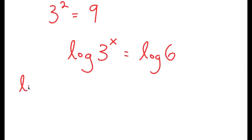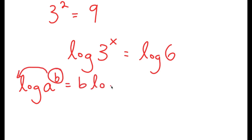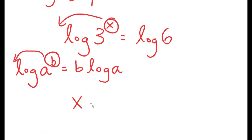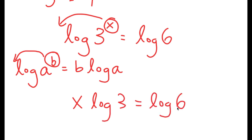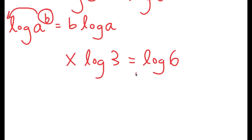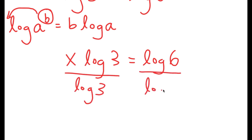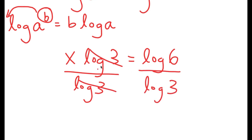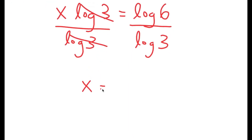From here, if I have something in the form log of a to the power of b, I can move this exponent of b to the front, so this turns into b times log a. So I have log of 3 to the power of x, and I can move x to the front. I get x times log 3 is equal to log 6. Now I'm going to divide both sides by log 3 because we want to isolate x. These two cancel out and I get x is equal to log 6 over log 3.